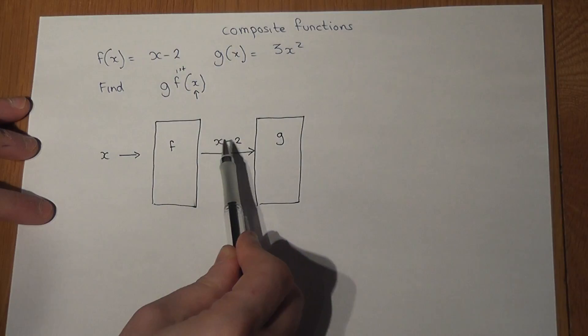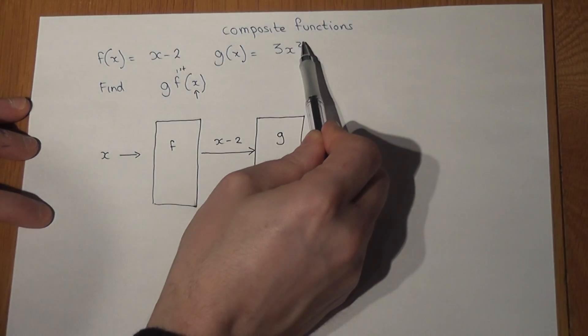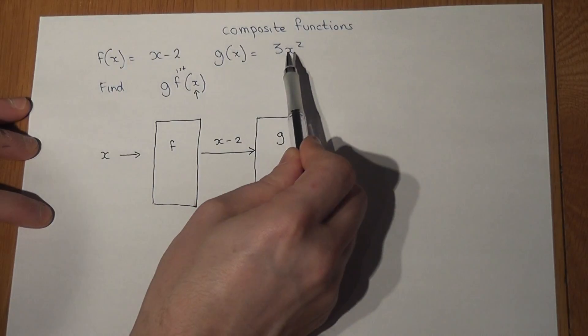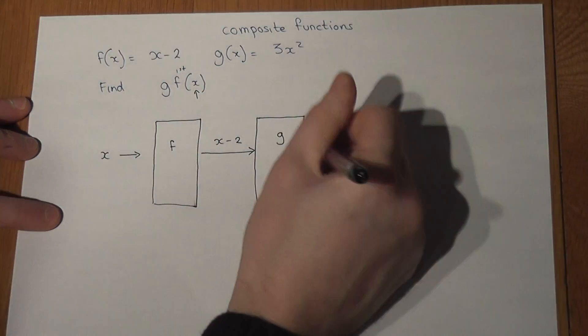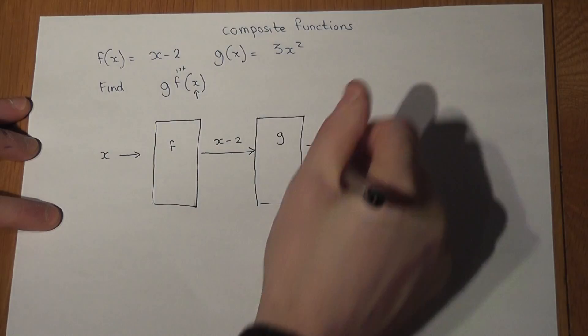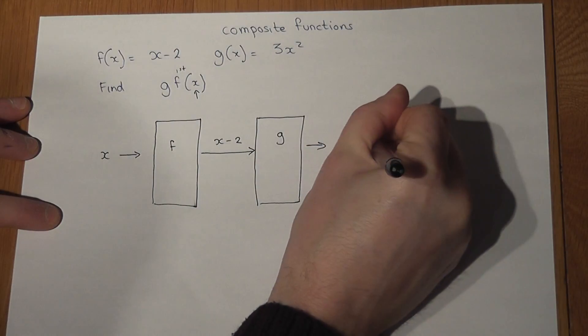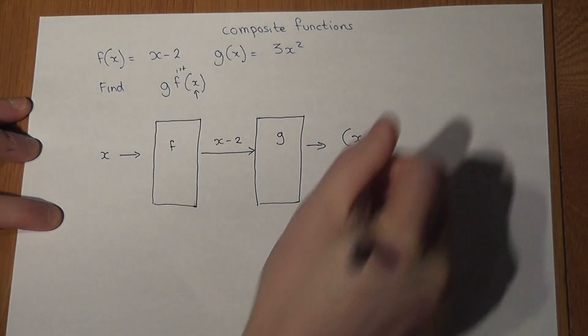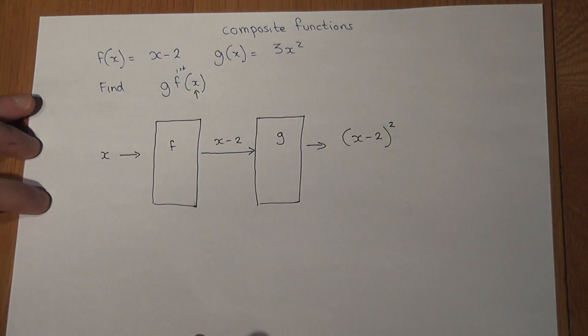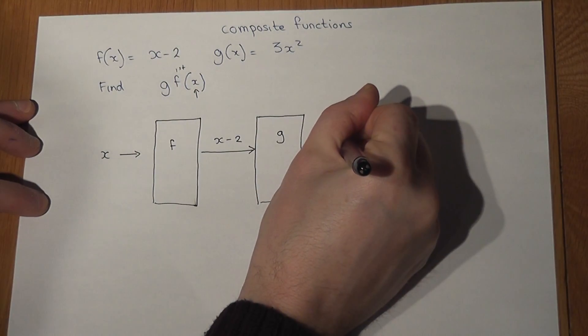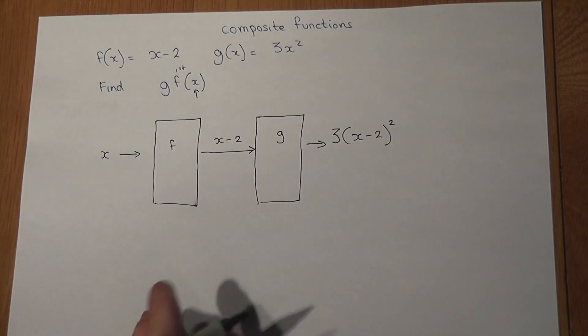longer x, it's x minus two. So my entire input is being squared, and this is then being times by three. So the output is my entire input being squared, and this is then being multiplied by three. And I